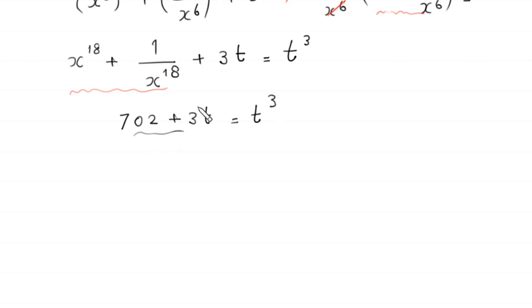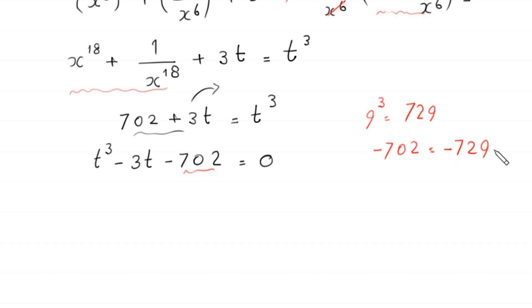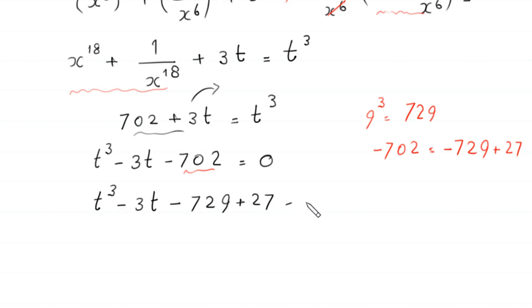Now we move these two terms to the right hand side, giving t cubed minus 3t minus 702 equals 0. The nearest perfect cube to 702 is 729, which equals 9 cubed. So we rewrite negative 702 as negative 729 plus 27, giving t cubed minus 3t minus 729 plus 27 equals 0.